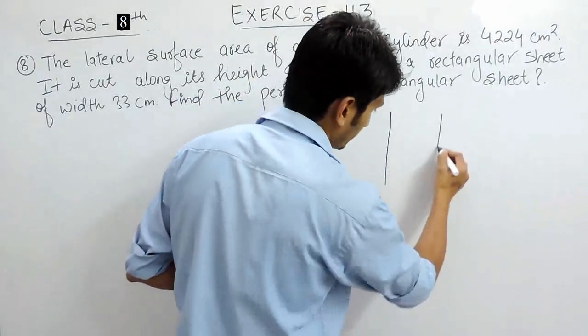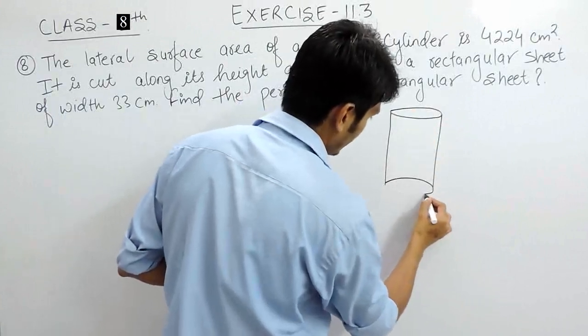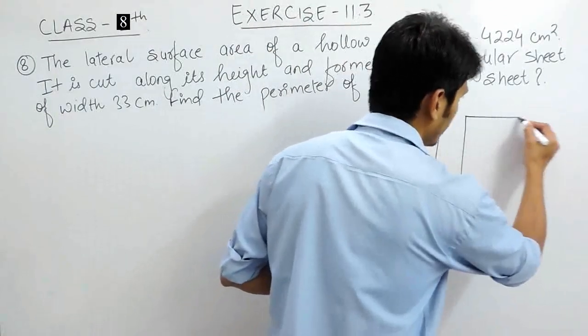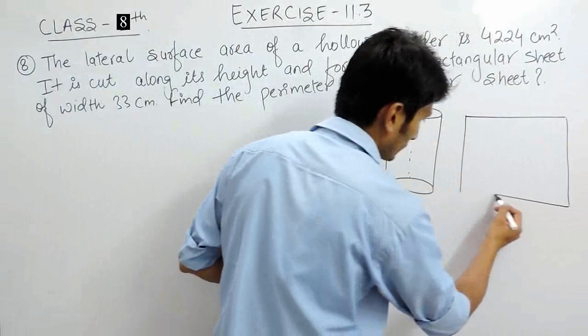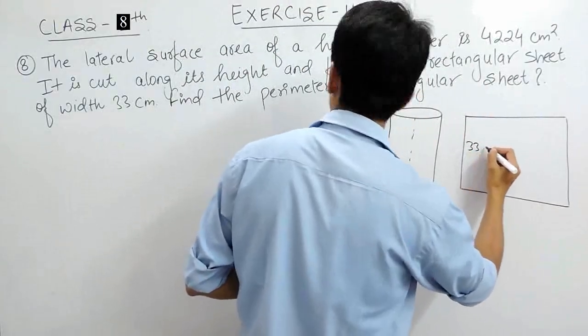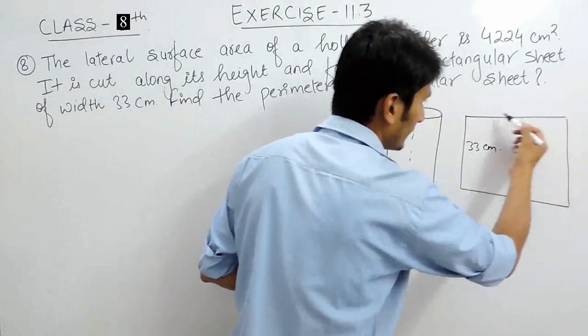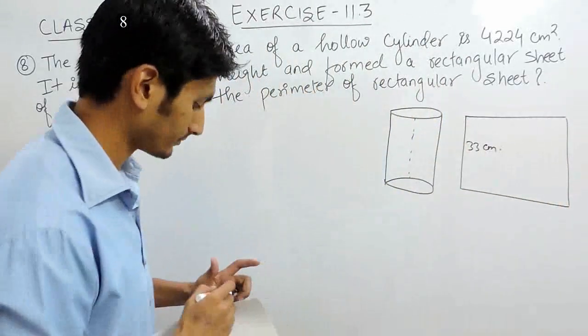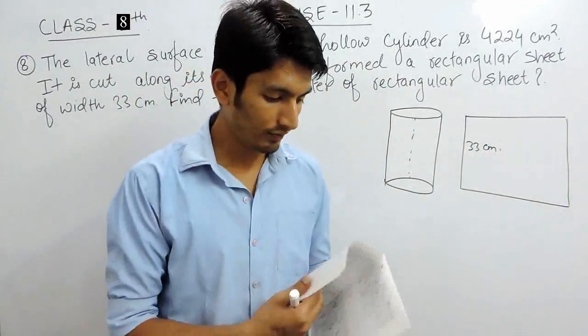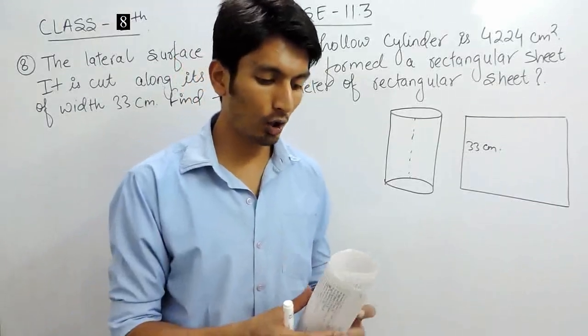It is given that you have a hollow cylinder and when it is cut along its height and opened, it forms a rectangular sheet of width 33 cm. And you have to find the perimeter of this rectangular sheet. Because these are 3D figures, let's see what will happen when we make a cylinder and cut it along its height.